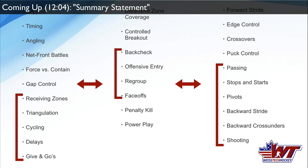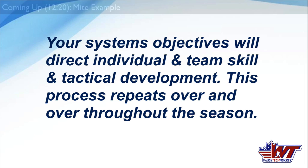As you branch into additional areas, you re-ask: what skills are needed? Passing, stops and starts, pivots, backwards stride, backwards crossunders, shooting — the list goes on depending on the systems you're targeting. In the tactics column, you teach receiving zones, passing to an area rather than a player, timing, triangulation, attack triangle responsibilities for F1, F2, and F3, cycling, delays, and give-and-goes. This is how you think through the game as a coach and turn it into on-ice application.